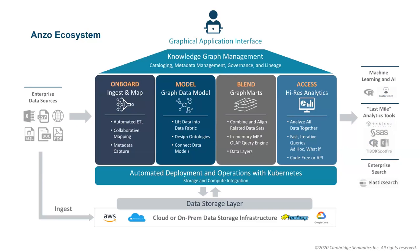First, we onboard the data by ingesting and mapping those sources. We can connect over 200 different sources, and we can also virtualize the data or bring it into our in-memory graph into a cluster. We can then create different data models to answer the questions we want, and blend those together in what we call graph marts. At the end, we access those with third-party analytics tools. We can also do analytics inside the Anzo data platform, and connect it with JDBC and OData to other BI reporting and analytical tools.